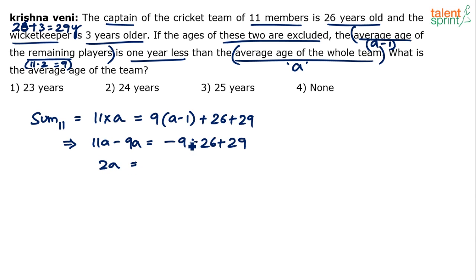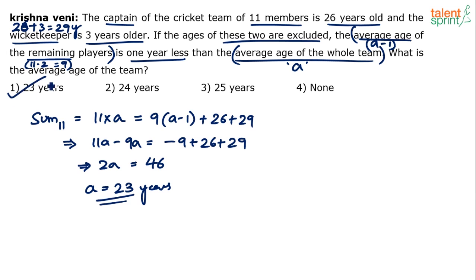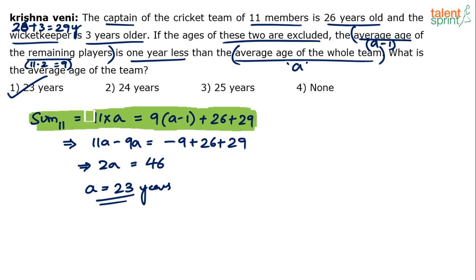So, 2A equals — 29 minus 9 is 20, and 20 plus 26 is 46. So 2A equals 46, which implies A equals 23. That's your answer. The average age of the whole team A is 23 years — option 1 is your answer. Just one step: write this one equation, solve, and you get the required answer. Some of you have marked 24, but that is wrong. 23 is the correct answer.